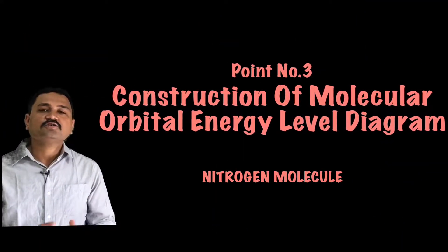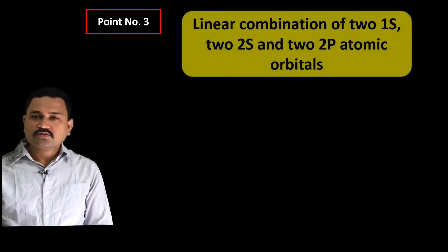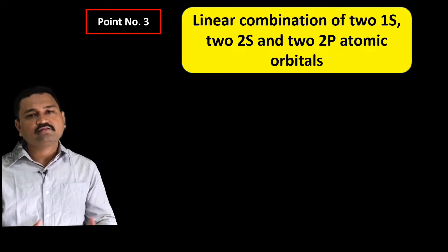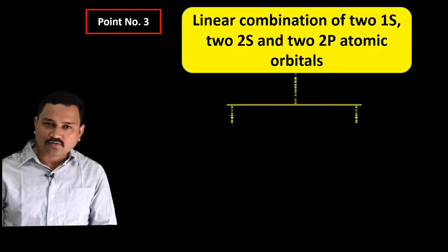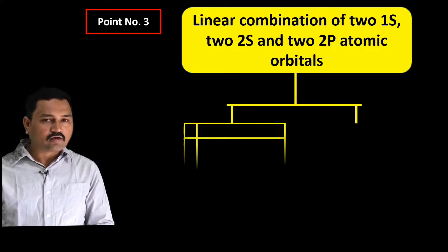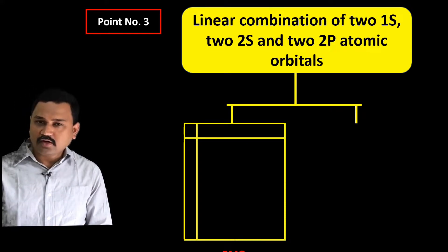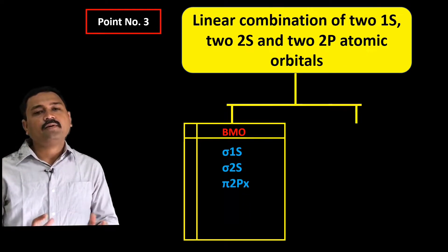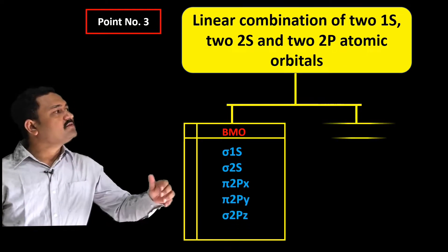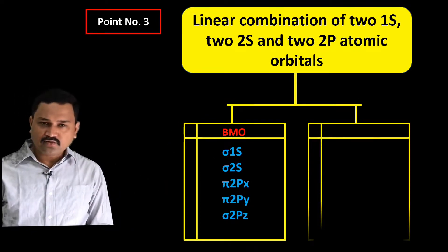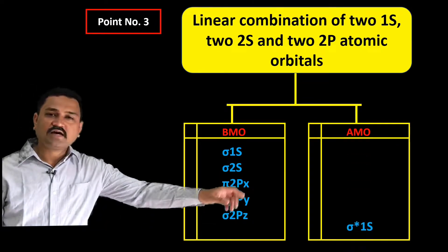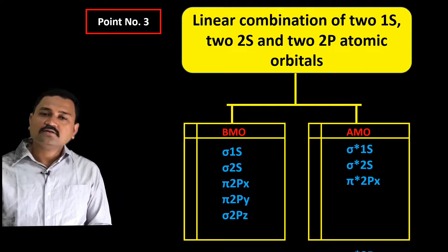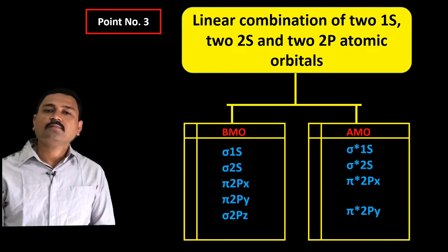Point number three: construction of the molecular orbital energy level diagram. The linear combination of two 1s, two 2s, and two 2p atomic orbitals of both nitrogen atoms forms 10 molecular orbitals. Five of these are bonding molecular orbitals: σ1s, σ2s, π2px, π2py, and σ2pz. The remaining five are antibonding molecular orbitals: σ*1s, σ*2s, π*2px, π*2py, and σ*2pz.